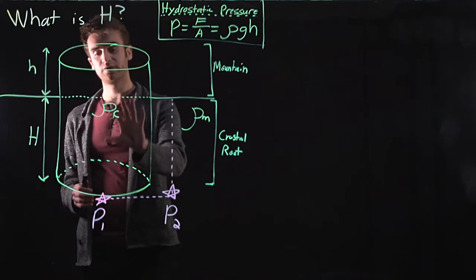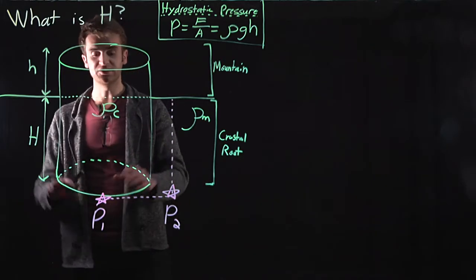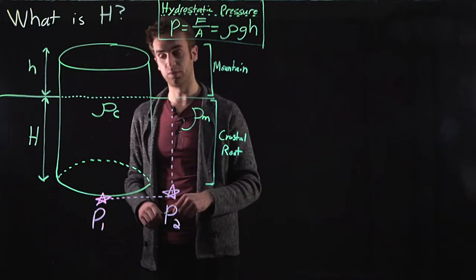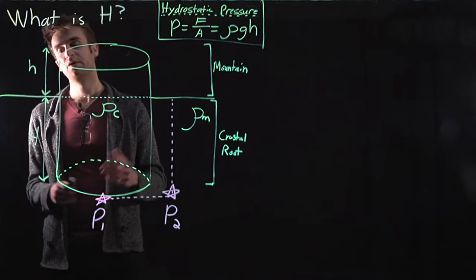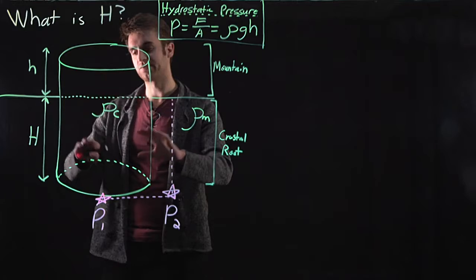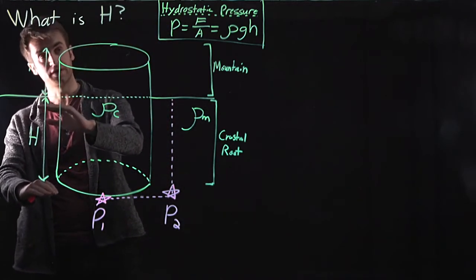The continent is made out of crustal rocks with density rho c. It is sinking into the underlying mantle, which has a density of rho m. Because we're in isostatic equilibrium, some amount of continent has submerged into the mantle. That depth of submergence, which is what we're trying to find,